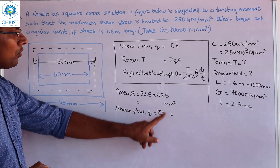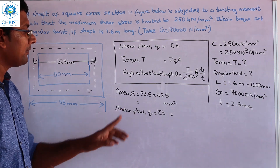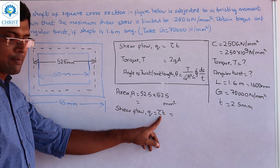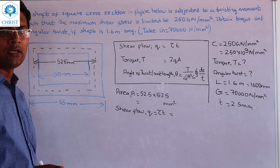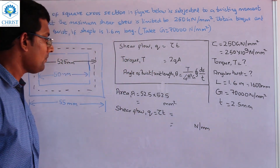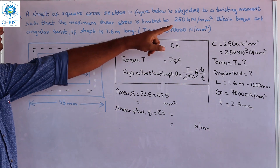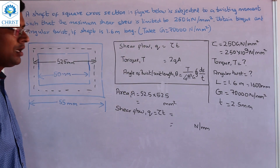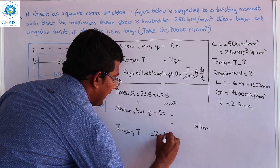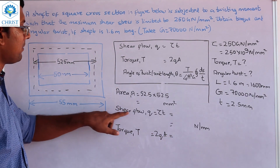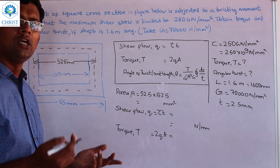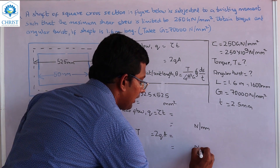Shear flow Q is equal to shear stress τ times thickness t. The unit of τ is N per mm squared and t is in mm, so Q will be in N per mm. From the shear flow, the torque is given by T equals 2QA, where A is the enclosed area. The unit of torque will be N·mm.